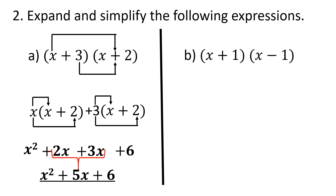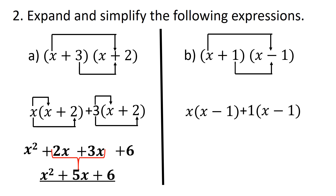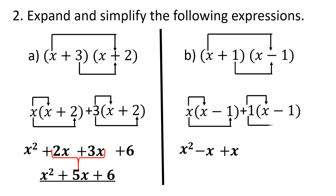Question b: x plus 1 multiplied by x minus 1. We first take x multiplied by x minus 1, then plus 1 multiplied by x minus 1. Expanding the brackets: x times x is x squared, x times negative 1 is negative x, plus 1 times x gives us plus x, and plus 1 times negative 1 gives us negative 1. We have common terms: negative x plus x gives us 0. So our expression simplifies to x squared minus 1, which is our answer.